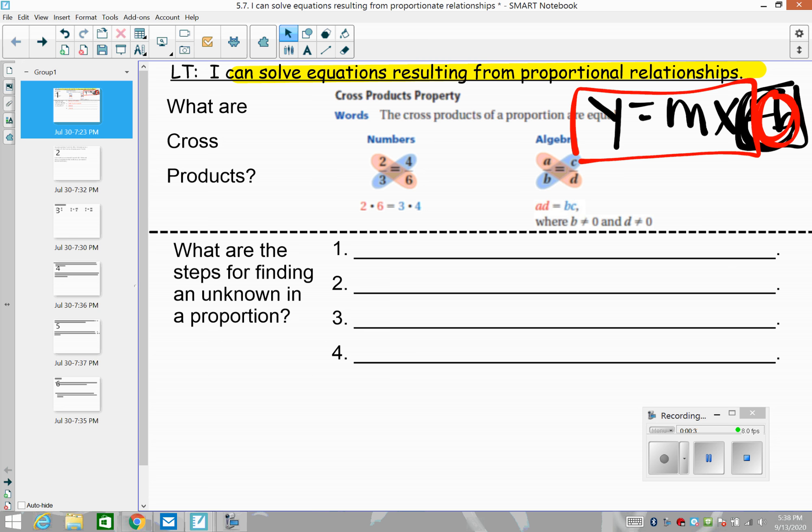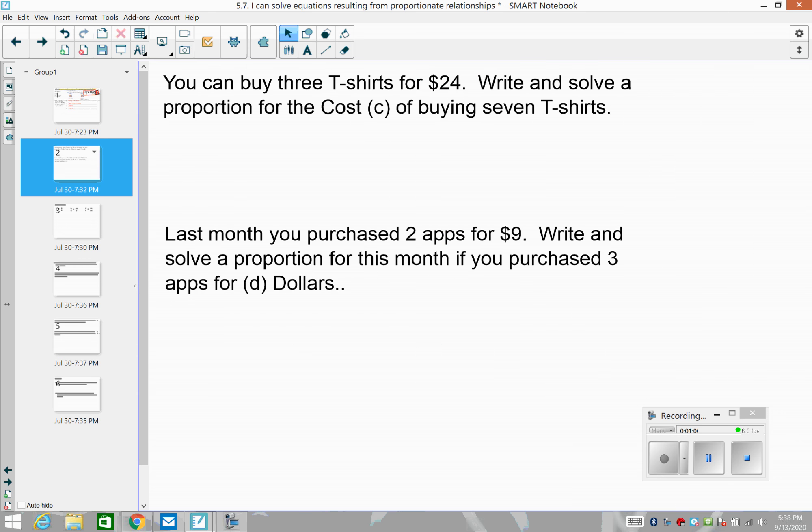So what are the steps for finding unknowns? We're going to talk about how we approach this idea of cross products. The first thing I'm going to ask you to do is to set up a table. Then I'm going to ask you to take cross products, which I'm going to walk you through. Then I'm going to ask you to solve. And then of course, we would want to check to make sure that we think that that makes sense. So our work today is to set up the table, then take cross products and then solve.